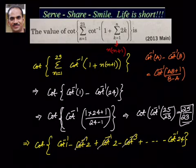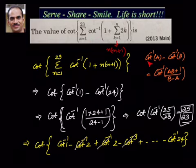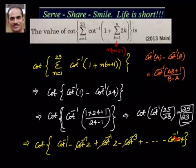Let's summarize the approach. First, simplify 1 plus sigma k=1 to n of 2k, which gives n(n+1). Then write it in the cot inverse difference formula form. We choose cot inverse A minus cot inverse B because the numerator has a plus sign, and A and B differ by 1 so we can write B minus A as 1. Applying the formula, most terms cancel, and going back to the formula gives the final answer 25/23. This is the 2013 IIT Main question.